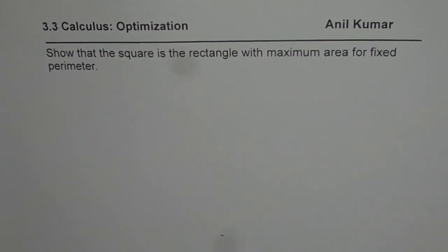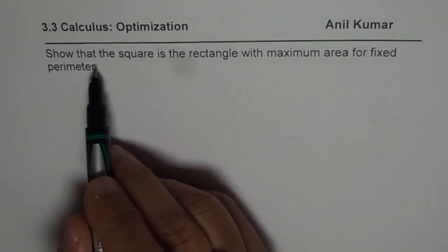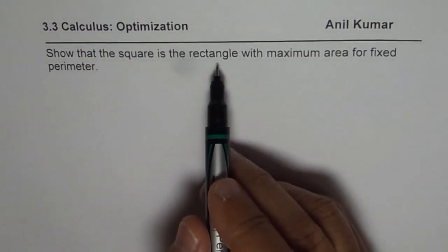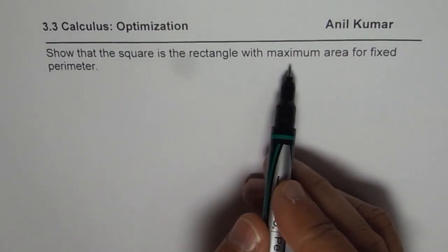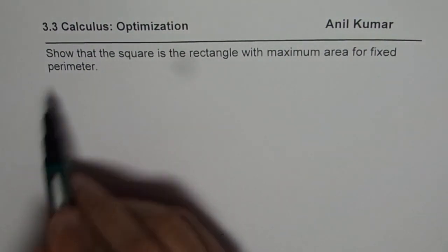I am Anil Kumar and with the help of this very general question, we will get to know a very important thing on optimization. The question here is: show that the square is the rectangle with maximum area for fixed perimeter.